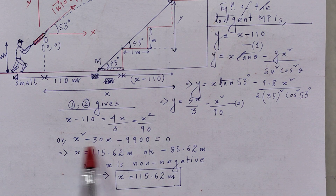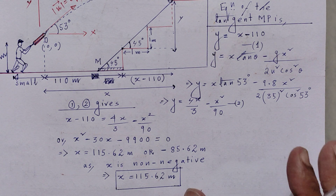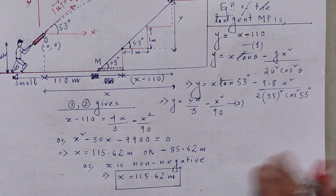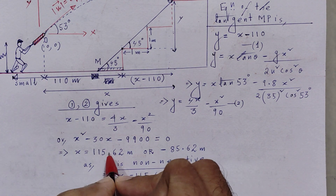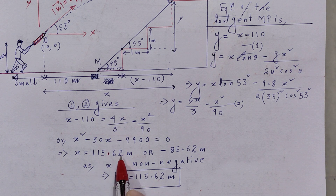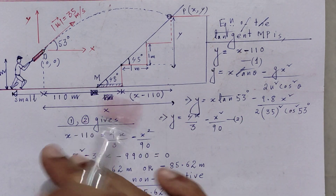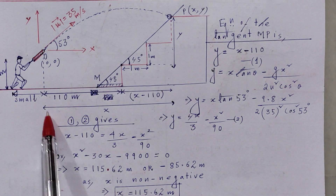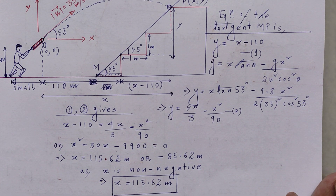Solving this quadratic equation — which all students at the plus-2 level should be comfortable with — gives two roots: x = 115.62 and x = −85.62. Since x must be non-negative, we take x = 115.62 meters. So the ball has traveled a horizontal distance of 115.62 meters when it hits the gallery.